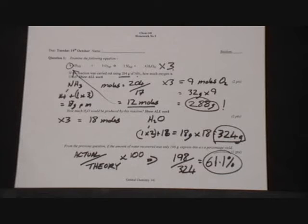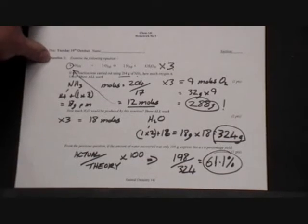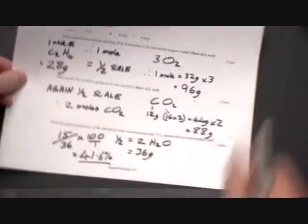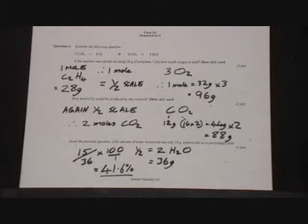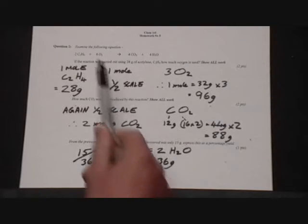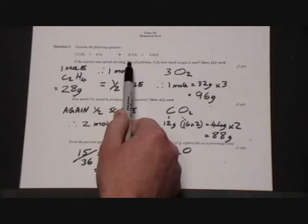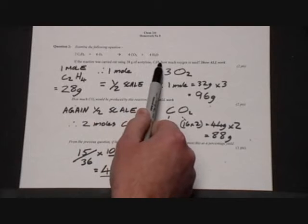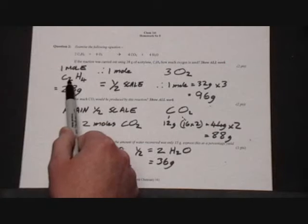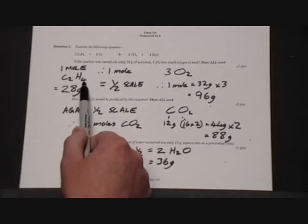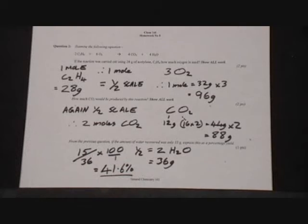So question two, another balanced equation with molar quantities. And we have been given 28 grams of the acetylene, C2H4. From the chemical formula, 12 grams for carbon times 2, 1 gram for hydrogen times 4. So one mole is 28 grams.